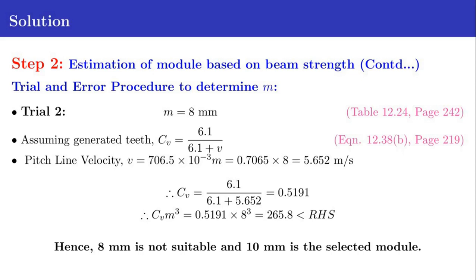By substituting this value of pitch line velocity in the equation for CV, we get 0.5191. Then substituting the values of CV and M in CV M cube, we get CV times M cube equals 265.8. This value is less than the RHS, which means the module 8mm is not suitable. But the module 10mm is suitable. Hence we select this module 10mm.